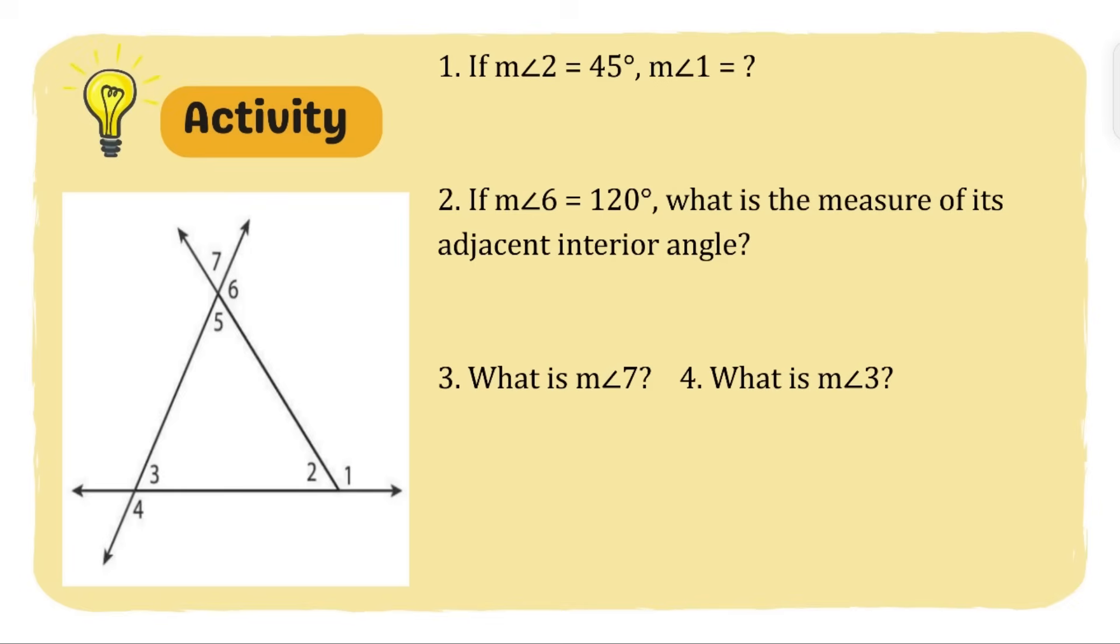Okay, let us now discuss the answers. Number one: if the measurement of angle 2 is equal to 45 degrees, what will be the measurement of angle 1? In our figure here, let's find out the measurement of angle 1 given that angle 2 is 45 degrees. What is the relationship of these two angles? They are linear pair. So just like our examples, you can just subtract from 180 the given angle, which is angle 2, 45 degrees. So 180 minus 45 degrees, we get 135 degrees.